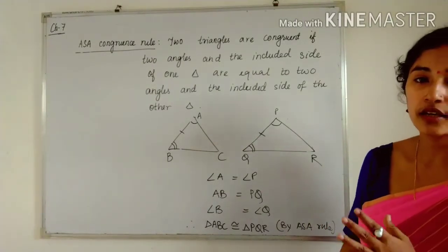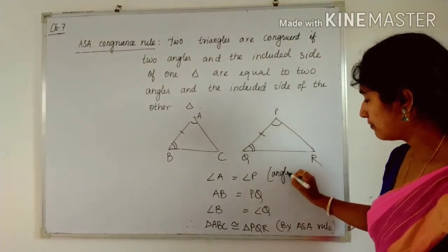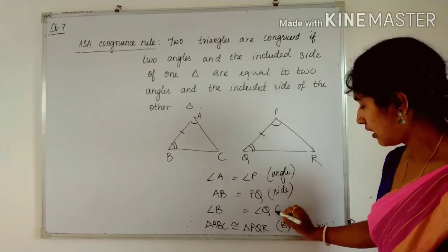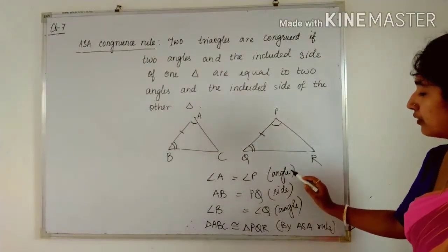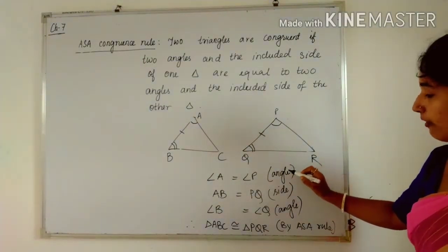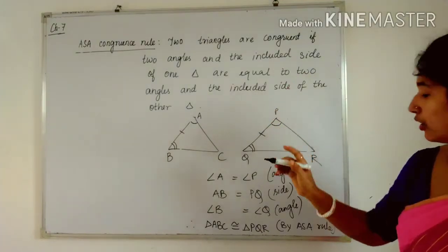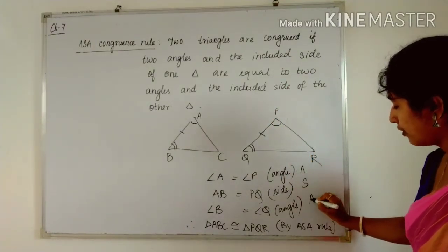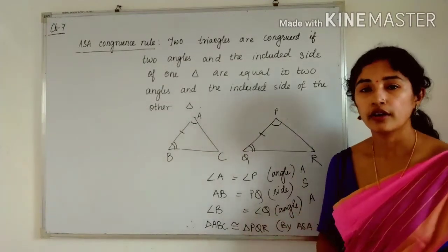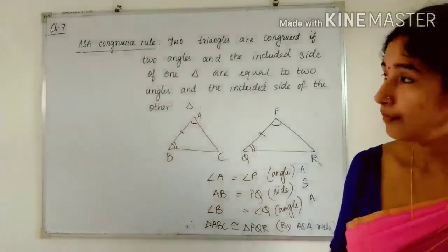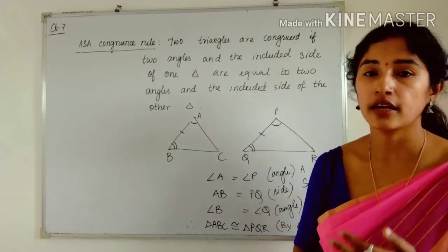This criteria is called the ASA congruence rule. By this rule we can say both triangles are congruent. In writing, the order is: first angle, then side, then angle — because ASA is our rule. So this is the Angle-Side-Angle rule. By ASA rule we can say both triangles are congruent. So the first rule we studied is SAS and the second is ASA.